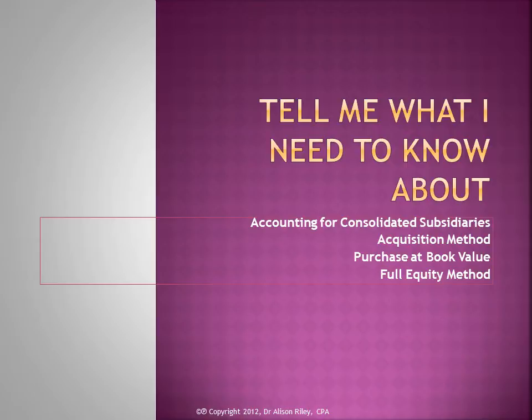Consolidation is performed using the acquisition method, since this is the only permitted method for acquisitions that occur after 2008. In the acquisition method, assets and liabilities of acquired entities are measured at fair value. In accounting for consolidation of controlled groups originating in or before 2008, the purchase method of accounting was allowed, and for certain controlled groups that combined prior to 2001, the pooling method was permitted.